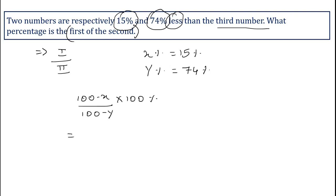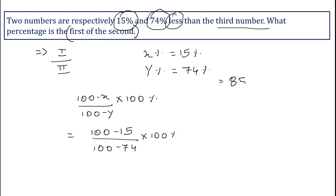Substituting the values: (100 minus 15) upon (100 minus 74) into 100 percent, which gives 85 upon 26 into 100 percent. Solving this, we get 326.92 percent. So 326.92 percent is the first of the second.